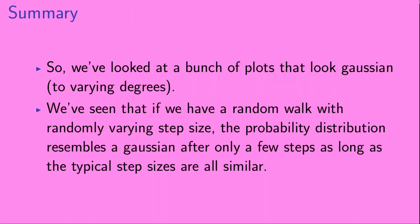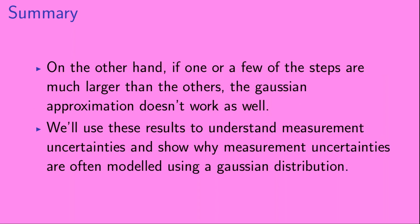We've seen here that the Gaussian approximation works really well if all of the steps have similar typical sizes, and the Gaussian approximation starts to fail if one, or a small number, of steps have sizes typically much larger than the others. To summarize: we've looked at a bunch of plots that look Gaussian to varying degrees. We've seen that if we have a random walk with a randomly varying step size, the probability distribution resembles a Gaussian after only a few steps, as long as the typical step sizes are all similar. We'll use these results to understand measurement uncertainties and show why measurement uncertainties are often modeled using a Gaussian distribution in other videos.